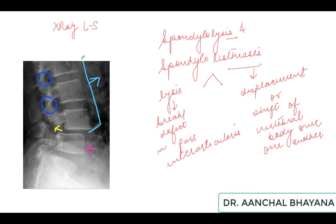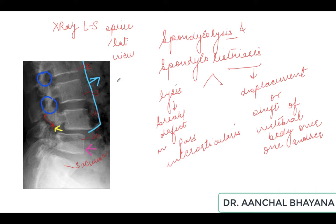This is an X-ray of the lumbosacral spine, lateral view. You can see the sacrum, L5, L4, L3, and L2. In the L4 vertebra, the pars inter-articularis is the part that connects the superior and inferior articular facets. Here you can see there is a gap — a defect or break in the pars inter-articularis, and this is the spondylolysis component.